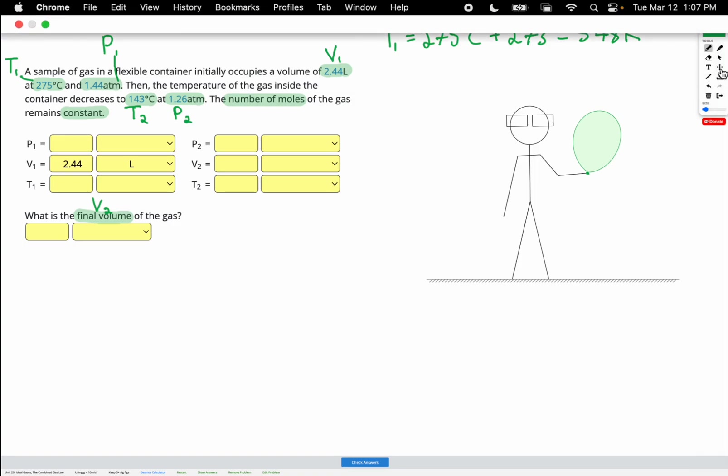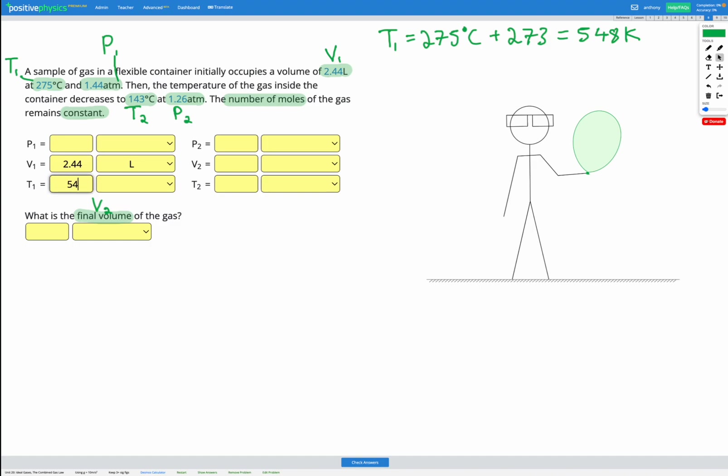So let's fill that in. T1, 548 Kelvin. We're also given the initial pressure of 1.44 atm.